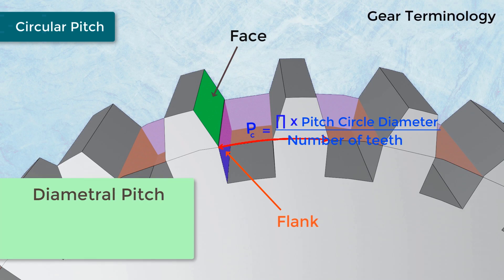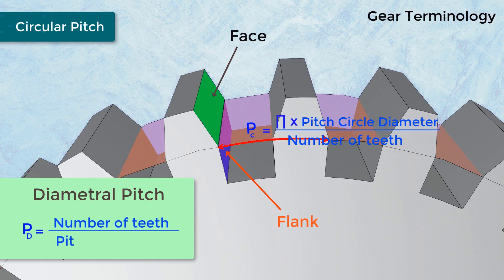Diametral Pitch: It is denoted by pd and given by: pd = number of teeth ÷ pitch circle diameter.